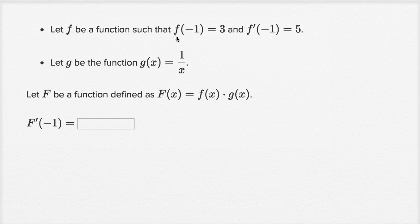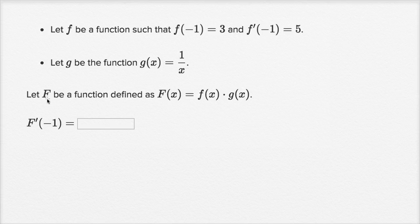Let f be a function such that f of negative one is three, and f prime of negative one is equal to five. Let g be the function g of x is equal to one over x. Let capital F be a function defined as the product of those other two functions. What is capital F prime of negative one?